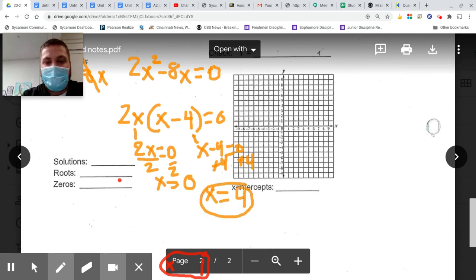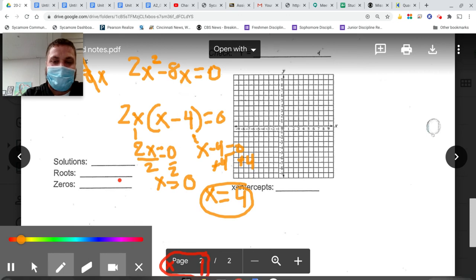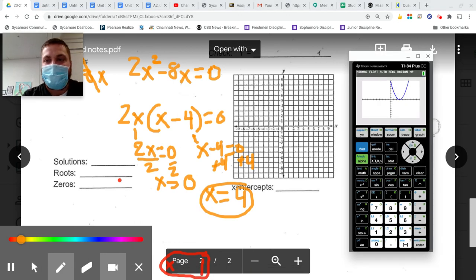Again, I could use my calculator here to either check my work or whatever is being asked of you from the worksheet or from your teacher. I type in the original problem: 2x squared minus 8x. And I'm anticipating that's going to cross the x-axis at zero and also at four, and it does.